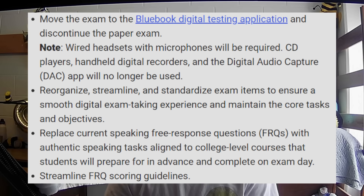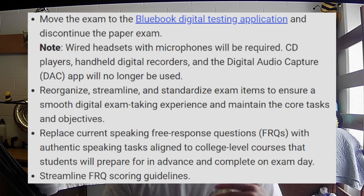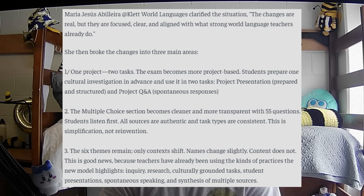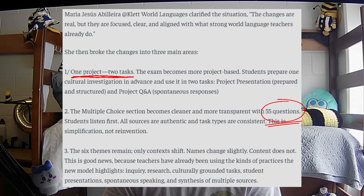They're going to be replacing current speaking FRQs with authentic speaking tasks so that the courses are more aligned with the college-level course. According to Maria Jesus Abiera at Clet World Languages, the MCQ section is going to become cleaner and more transparent with 55 questions, and all sources are authentic and task types are consistent. It sounds like these language exams should be getting a bit easier starting in the 2026 school year.